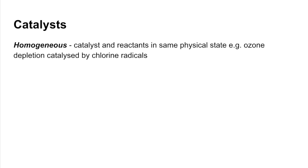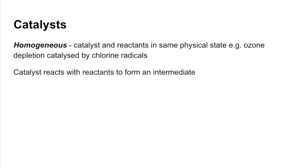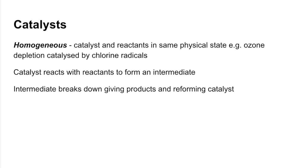Looking at catalysts in more detail — the two types of catalysis. Homogeneous catalysis is where the catalyst and reactants are in the same physical state. An example is the depletion of ozone in the atmosphere, catalyzed by chlorine radicals — everything's in the gas phase. The catalyst reacts with the reactants to form an intermediate, and then that intermediate breaks down to give the product and the catalyst is reformed.